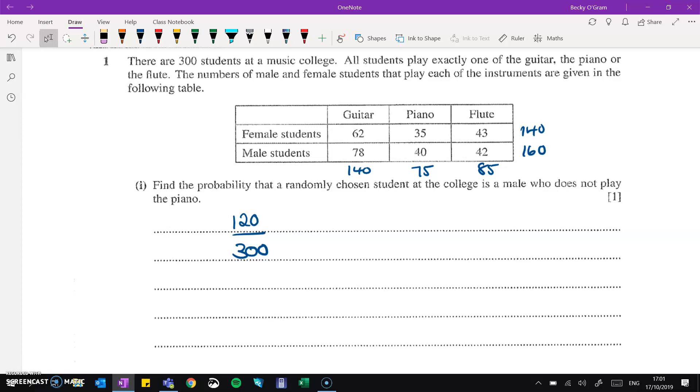We've got 300 students at a music college and in the table some information about the instrument that they play. We're told that they all only play one of them. There's nobody that plays like guitar and piano, for example, and that everybody has to play something. Find the probability that a randomly chosen student at the college is male and does not play the piano. What I've done on the table, just to make things a bit easier, I just added up those totals in case I need them later on. So male and doesn't play the piano means that they are guitar and flute. So we put those two together. That makes 120 out of 300 all together.